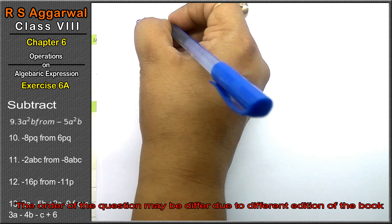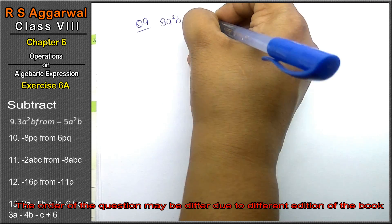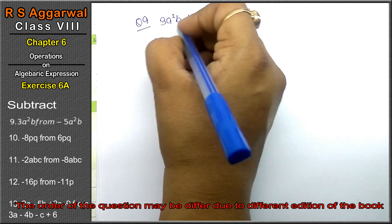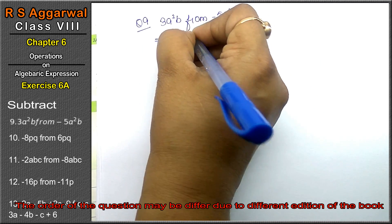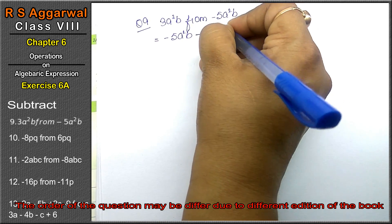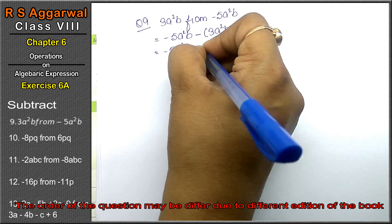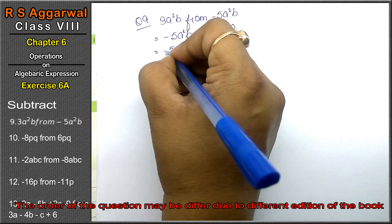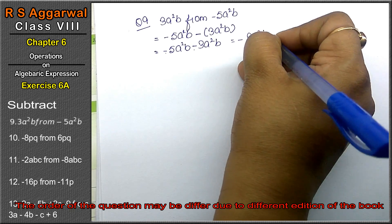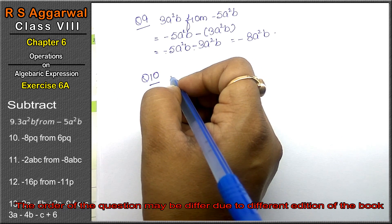Question number 9 is: subtract 3a²b from -5a²b. Friends, with 'subtract...from', we write the digit after 'from' first, then apply the subtraction sign, then write the first digit. So we get: -5a²b - 3a²b. Both have the same sign, so 8a²b is the answer.